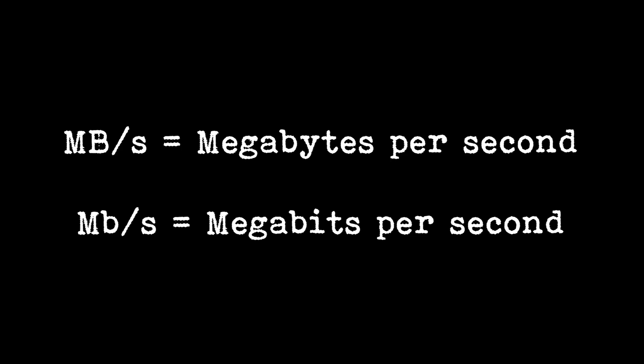Whenever there's a capital B, it means megabytes. Whenever there's a small b, it means megabits. There are eight megabits to every megabyte, so your megabits number is a lot higher.